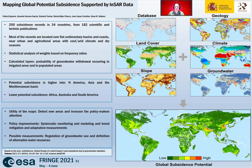Since land subsidence is usually considered a local problem, this work aims to change from local-scale studies to a global perspective that focuses on the conditioning factors of land subsidence to perform a global assessment. Combining information from detected subsidence areas, geological and geographical factors and the influence of groundwater use, global subsidence susceptibility and potential maps were calculated using a statistical analysis based on frequency ratios.